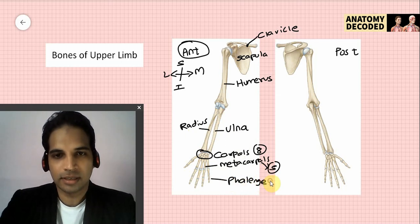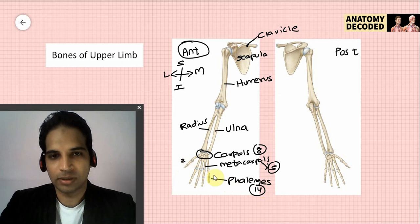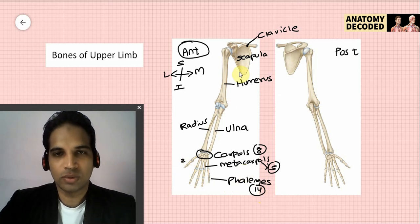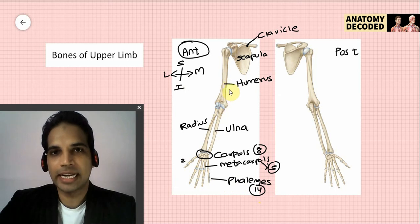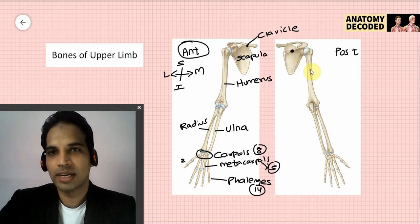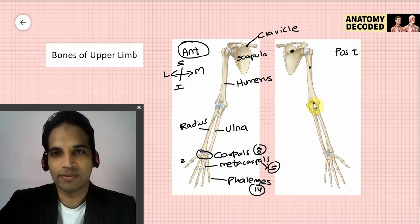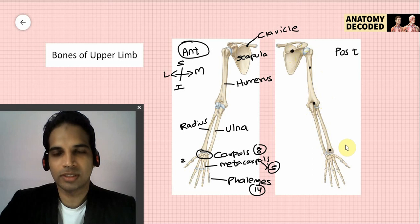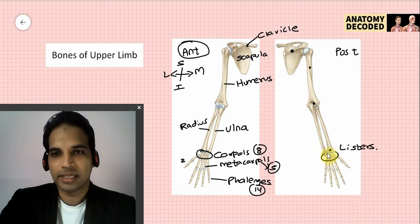Carpals are eight in number, metacarpals are five in number, and then there are phalanges — fourteen in number. All fingers have got three phalanges except the thumb which has got two phalanges, that's how phalanges are 14 in number. On the posterior aspect, prominent features include the spine of the scapula, the radial groove and olecranon fossa on the humerus, and Lister's tubercle on the radius.